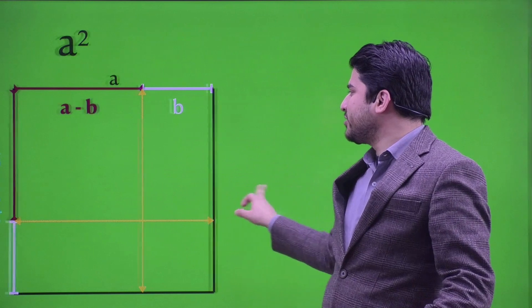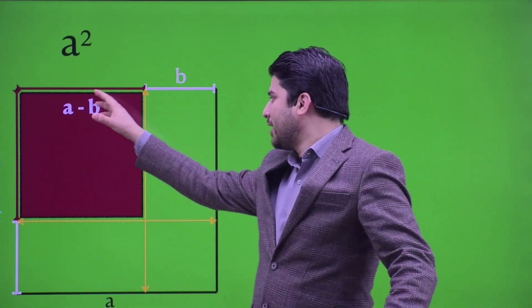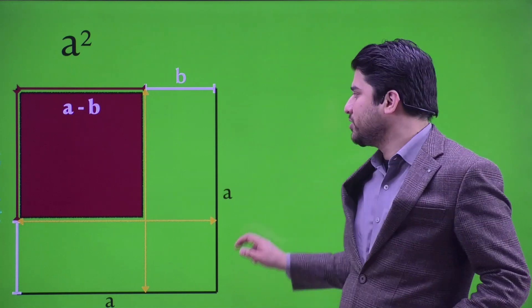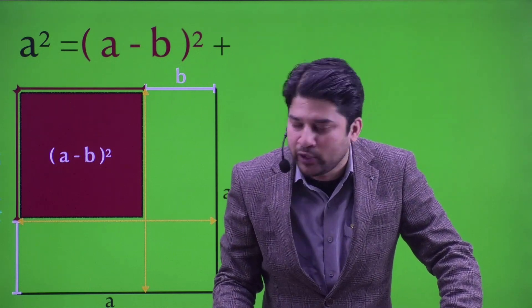Now let's look into the first region. The side is going to be (a minus b) and (a minus b), which is nothing but a square of dimension (a minus b) by (a minus b). What is the area of this red region? It's going to be (a minus b) multiplied with (a minus b), that is (a minus b) whole square.